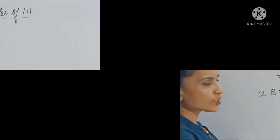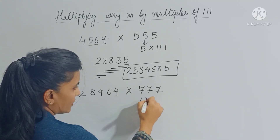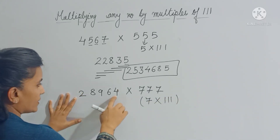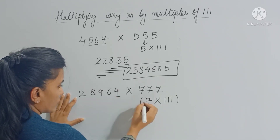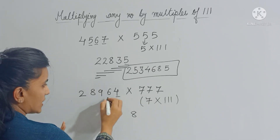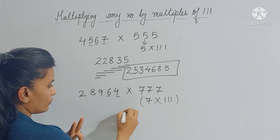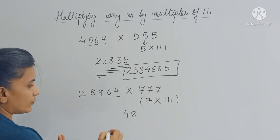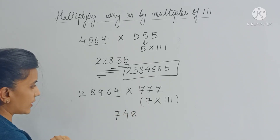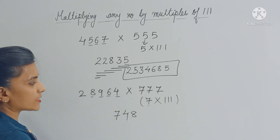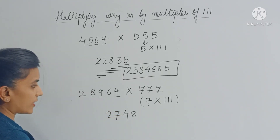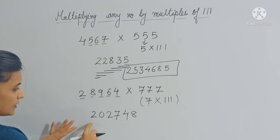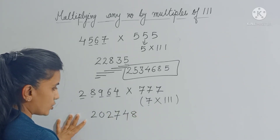Now let's do the next problem. We break down 777 as 7 × 111. First, multiply this number by 7: 4 × 7 = 28, carry 2; 6 × 7 = 42 + 2 = 44, carry 4; 9 × 7 = 63 + 4 = 67, carry 6; 8 × 7 = 56 + 6 = 62, carry 6; 2 × 7 = 14 + 6 = 20.